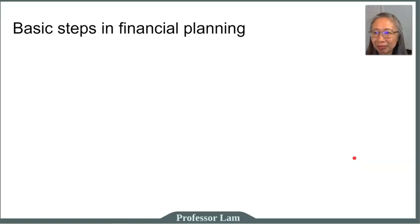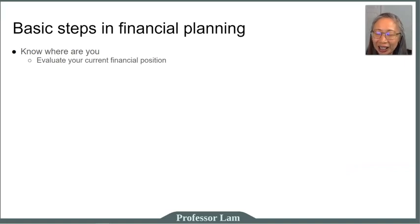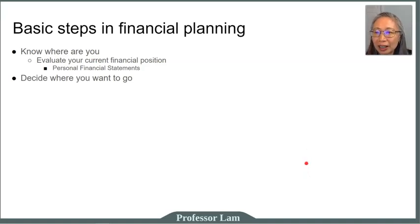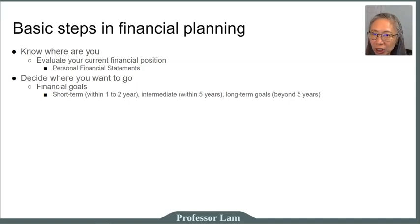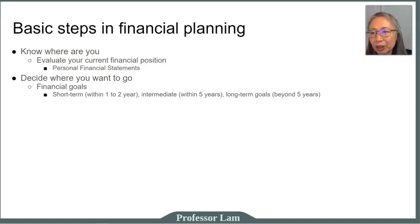Here are the basic steps in financial planning. Step one is to know where you are, because if you don't know where you are, you can't really go where you want to go. So you have to evaluate your current financial position, and we'll go over how to create your personal financial statement. Then you need to decide where you want to go — that means setting your financial goals. We typically classify goals based on time frame: short-term goals are within one to two years, intermediate goals are within five years, and long-term goals are beyond five years. Short-term goals may be simple purchases, emergency funds, or vacations. Intermediate goals may be larger purchases such as a car or down payment for a house. Long-term goals will be planning for your children's education or your own retirement.